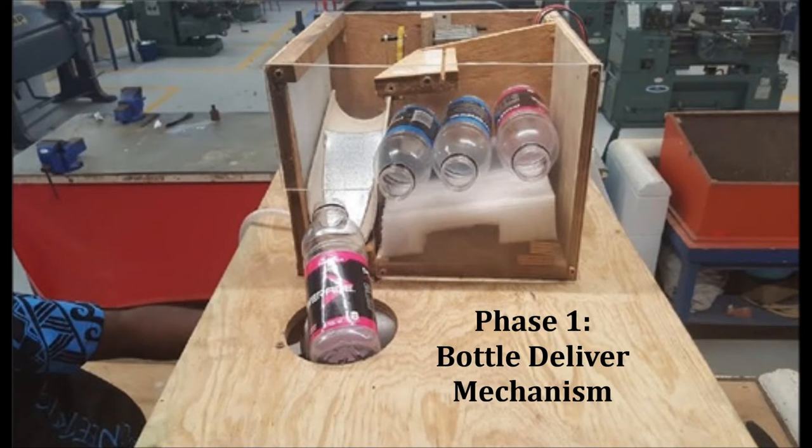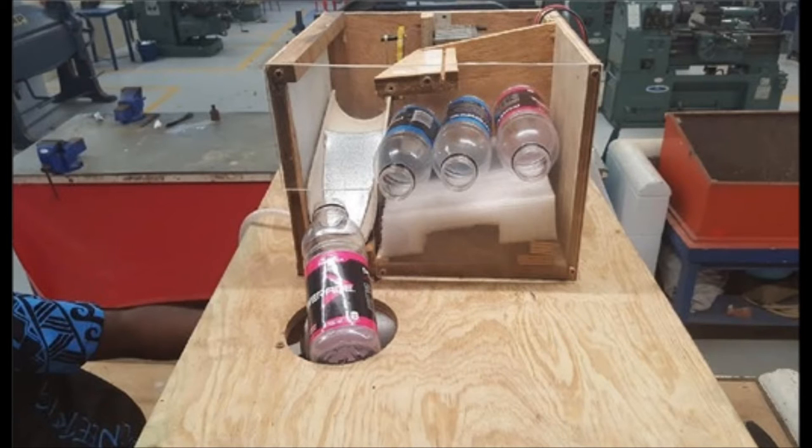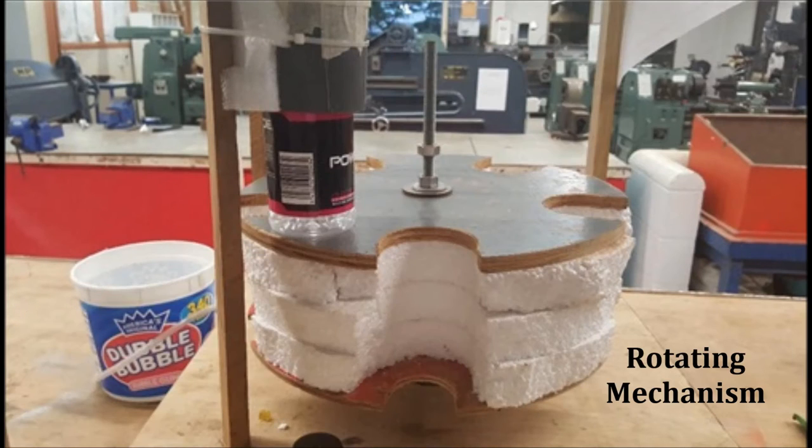The first phase is the bottle delivery into the system. All the bottles are stacked in this mechanism. A DC motor is used to operate a lever system which slides each bottle down a tube. The motor is powered at full capacity at 12 volts.